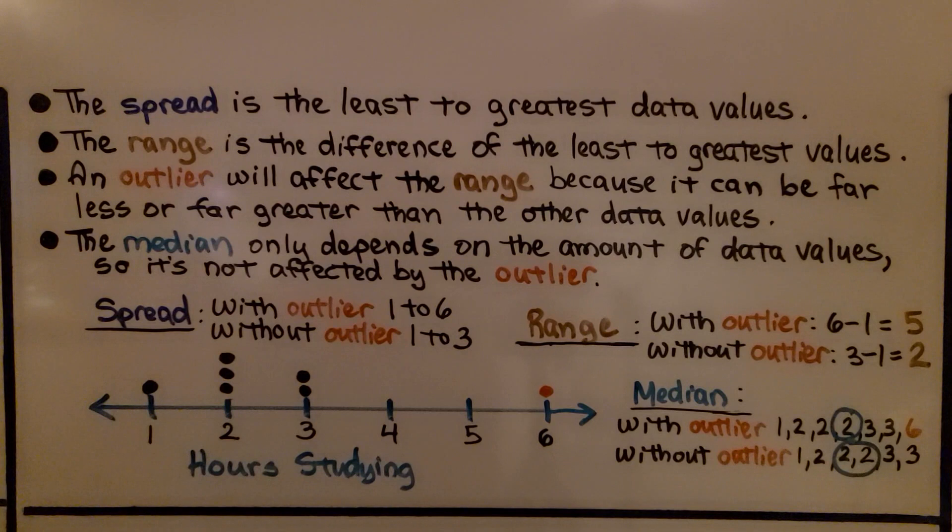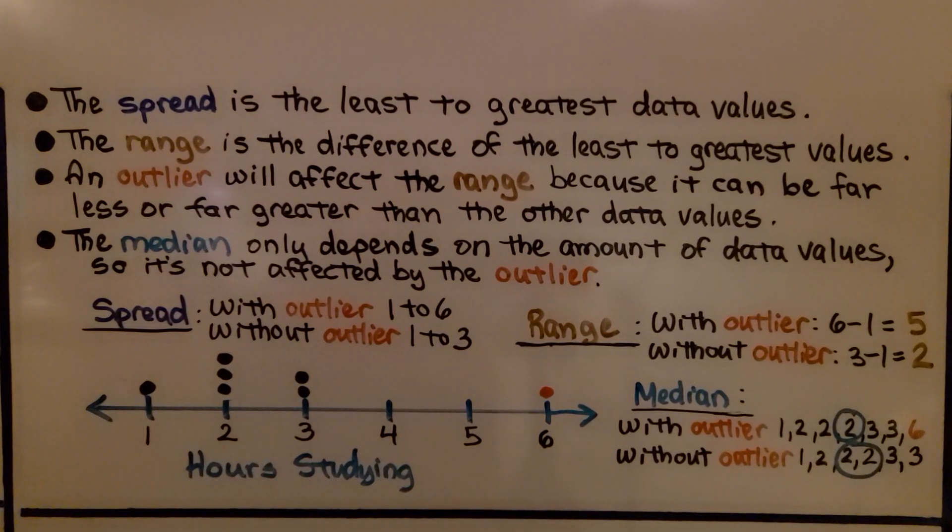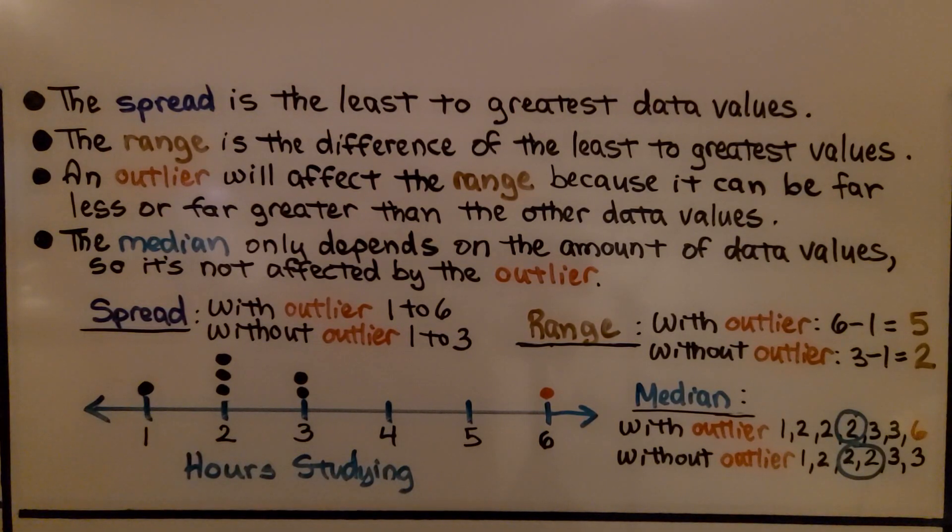The spread is the least to greatest data values. The range is the difference of the least to greatest values. An outlier will affect the range because it can be far less or far greater than the other data values. The median only depends on the amount of data values, so it's not affected by the outlier.